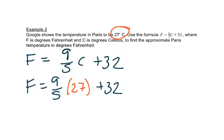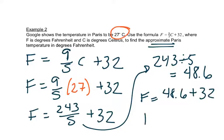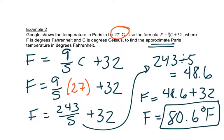We can do this in our calculator. You can take 9 fraction 5 times 27. And we get 243 over 5 plus 32. Now it says approximate here. Let's do this as a decimal. So let's take 243 and divide by 5. I get 48.6. So this is really 48.6 plus 32. We get that this is equal to 80.6 degrees Fahrenheit. So 27 degrees Celsius is the same as 80.6 degrees Fahrenheit.